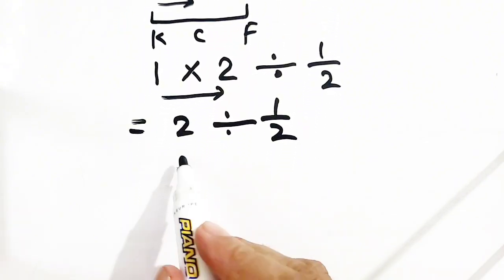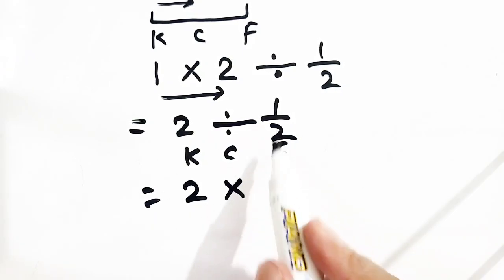So, again, we will apply KCF. K mean 2 remain same, change, 1 by 2 is flipped, it will become 2.